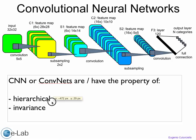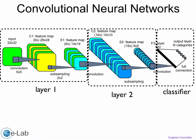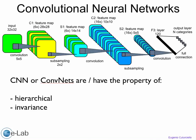One of them is they're hierarchical. What that means is they have multiple layers of feature extraction — layer one, layer two — they could have multiple more before they come into a classifier. They also have the property of invariance.